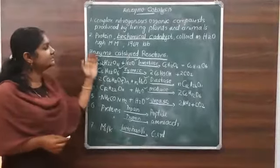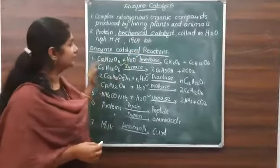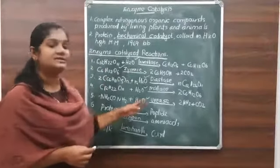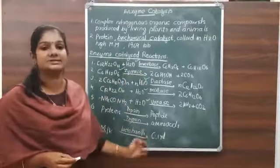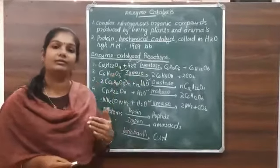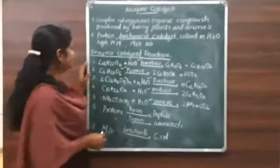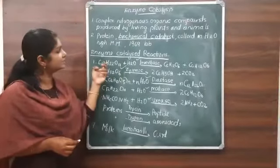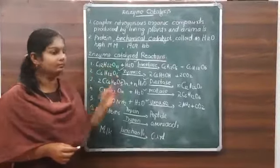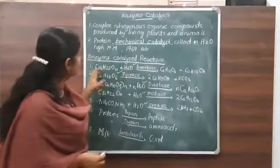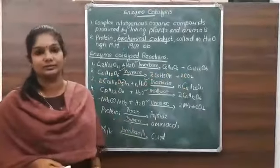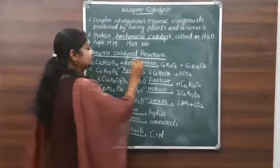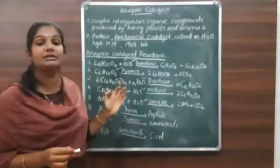Next, we have enzyme-catalyzed reactions. This example is hydrolysis of cane sugar. Sugar formula is C12H22O11 plus water. Hydrolysis of cane sugar gives glucose and fructose. The reaction is carried out in presence of an enzyme called invertase.